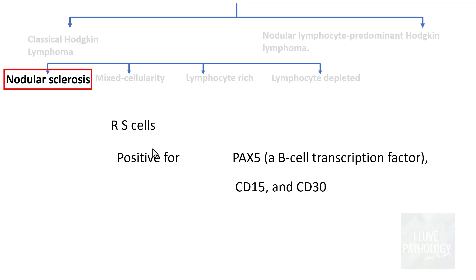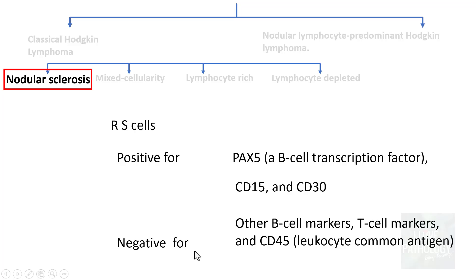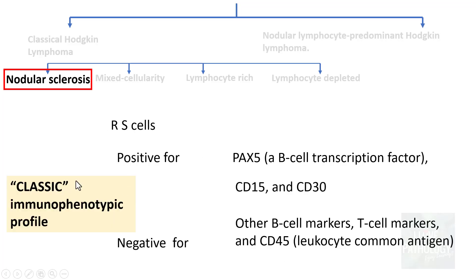Immunohistochemically, the Reed-Sternberg cells are positive for PAX-5, which is a B-cell transcription factor. Most importantly, they are positive for CD15 and CD30. They are negative for B-cell markers — because as seen in pathogenesis, B-cell markers are lost — and also negative for T-cell markers and leukocyte common antigen CD45. This is the classic immunophenotypic profile: PAX-5 positive, CD15 and CD30 positive, and B-cell marker negative.